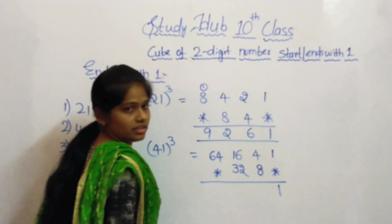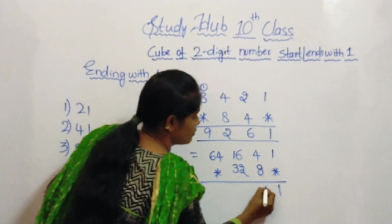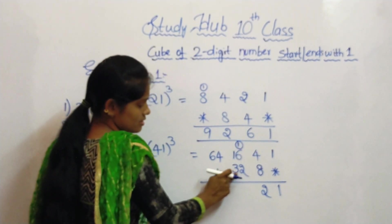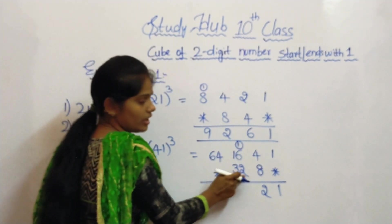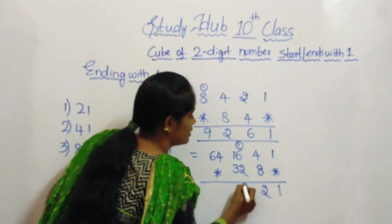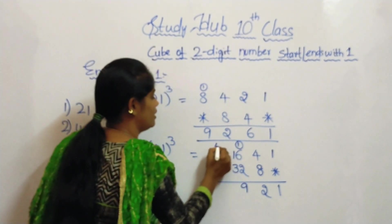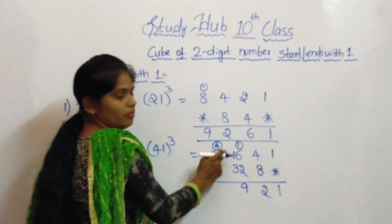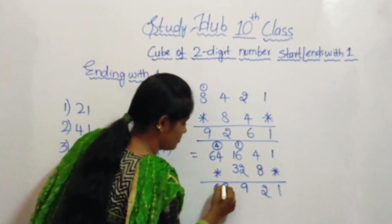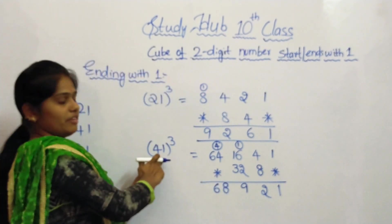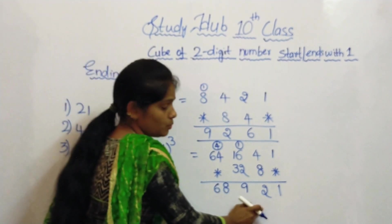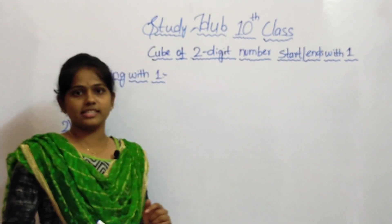1. 8 plus 4 is 12 — write 2 here and carry 1. 32 plus 16 is 48, plus 1 is 49 — write 9 here and carry 4. 64 plus 4 is 68. So the cube of the number 41 is 68,921.